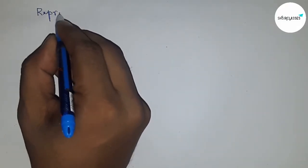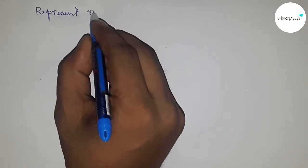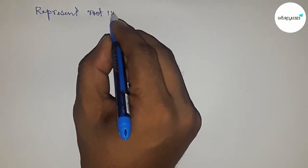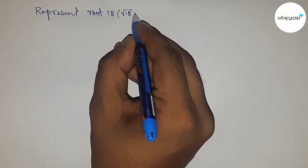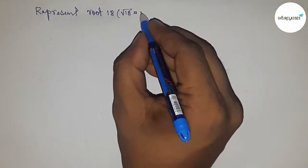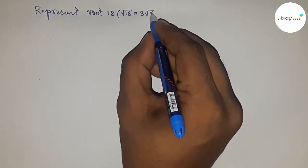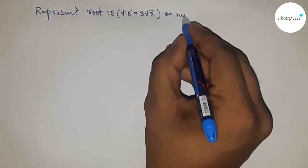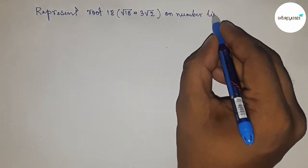Hi everyone, welcome to SSR Classes. Today we're talking about the representation of √18 on the number line. We're representing √18 = 3√2 on the number line.